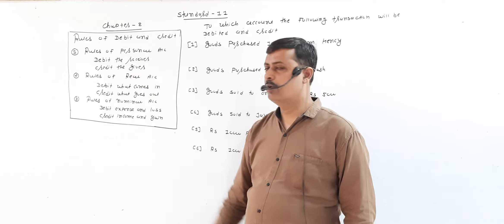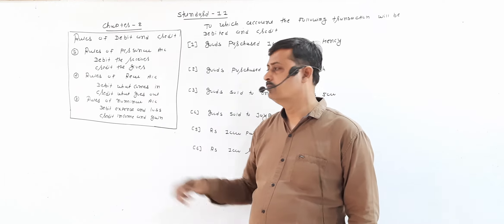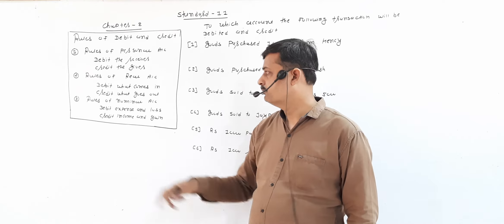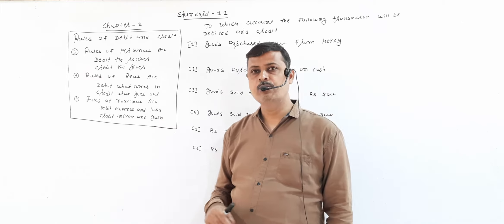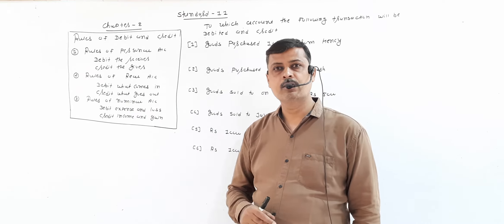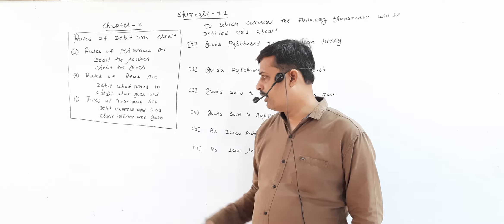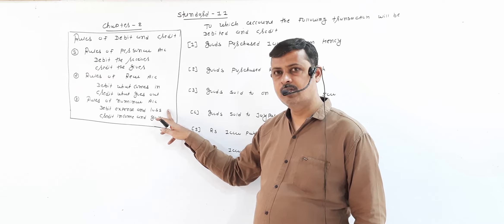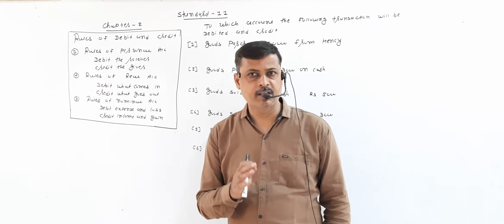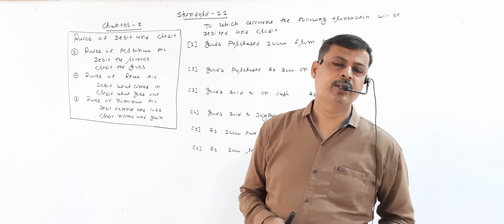Rules of personal account: debit the receiver, credit the giver. Rules of real account: debit what comes in, credit what goes out. Rules of nominal account: debit expenses and losses, credit income and gains. So these three rules are the foundation of the accounting system.